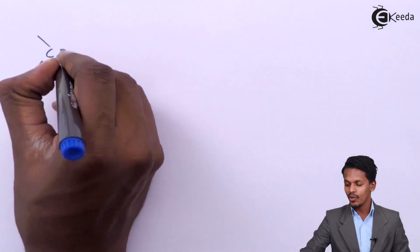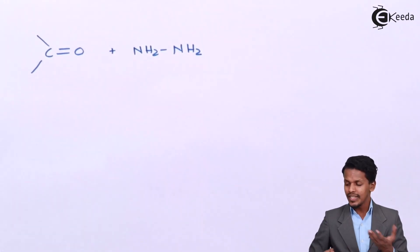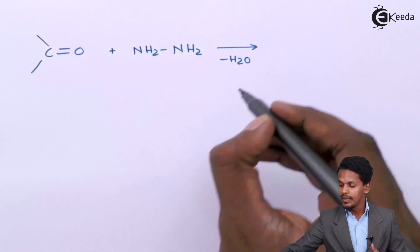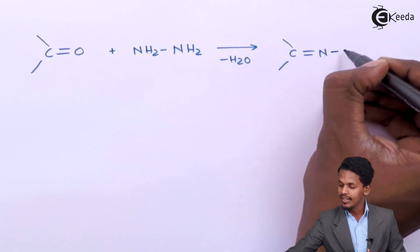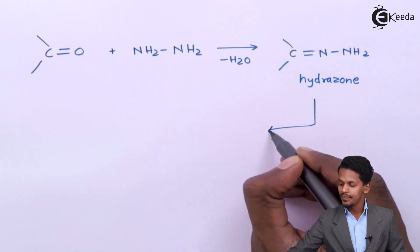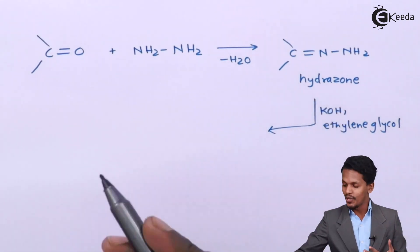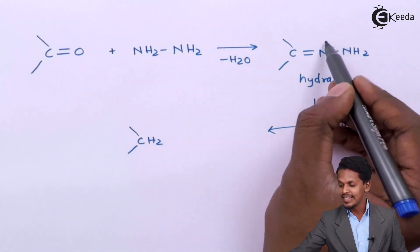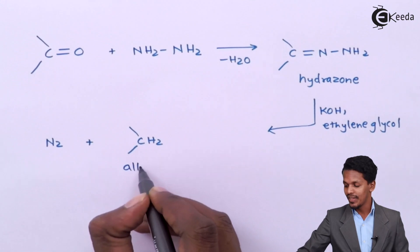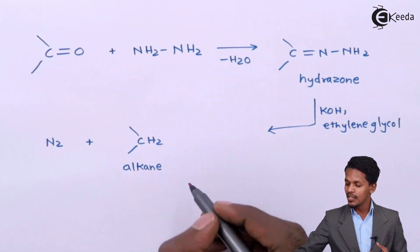There is another reaction: suppose an aldehyde or ketone reacts with hydrazine (NH2-NH2). This is a condensation reaction where an H2 molecule is removed and the product formed is C=N-NH2, which is a hydrazone. This hydrazone, on treatment with a strong base KOH in the presence of ethylene glycol, converts the hydrazone into CH2 while N2 is eliminated, producing an alkane. This kind of reaction is basically known as the Wolf-Kishner reaction.